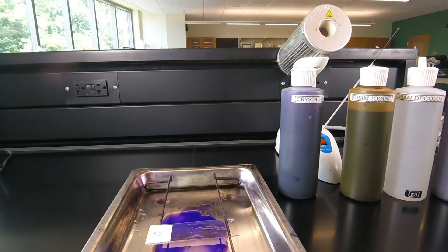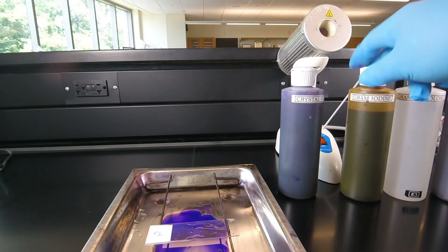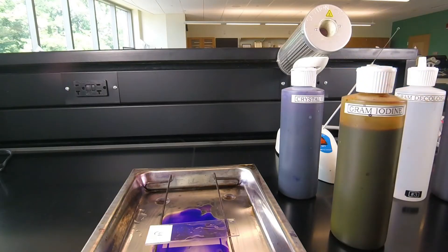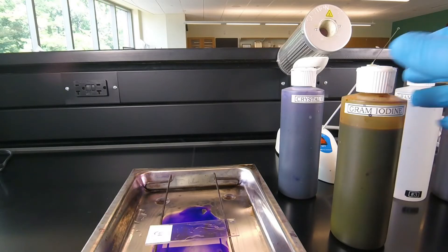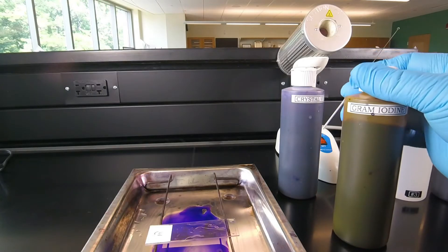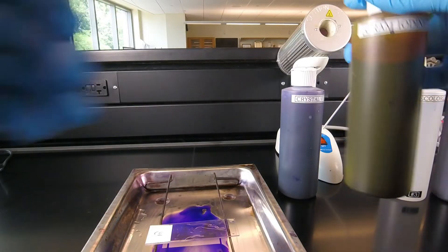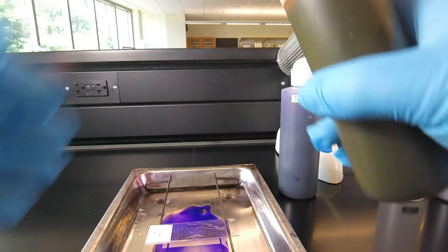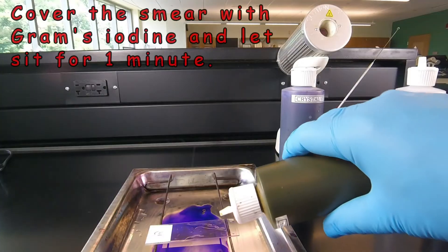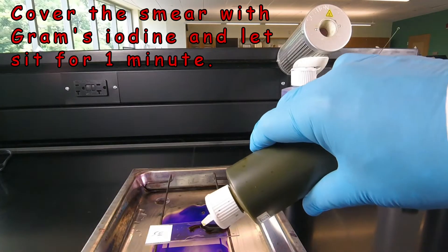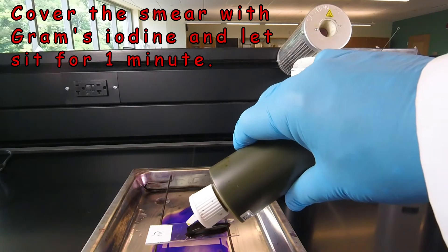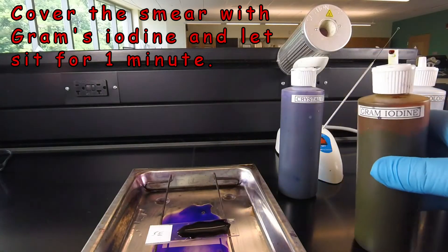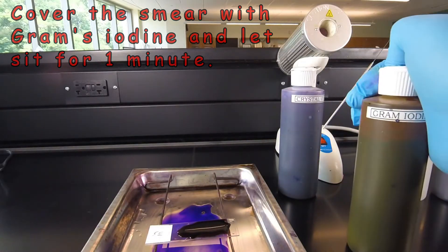The next step is to treat the bacteria with Gram's iodine. The Gram's iodine combines with the crystal violet inside the bacteria to form a water-insoluble crystal violet-iodine complex, and it helps the bacteria retain the crystal violet better. We add enough iodine to cover most of the smear, and we're going to let that sit for one minute.